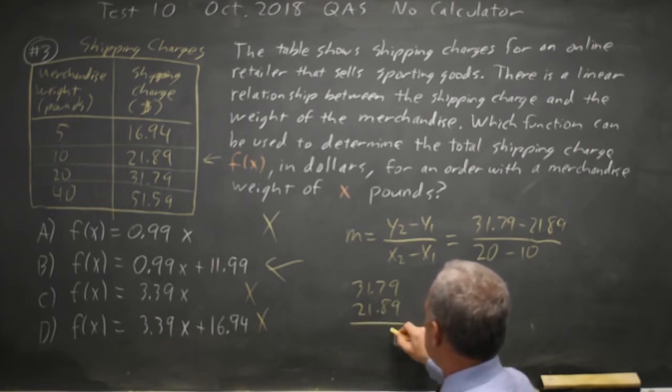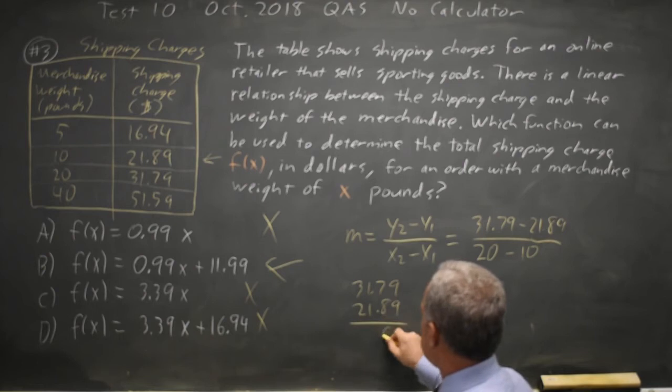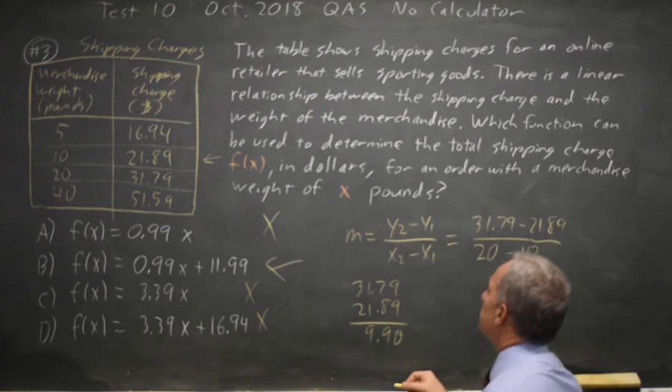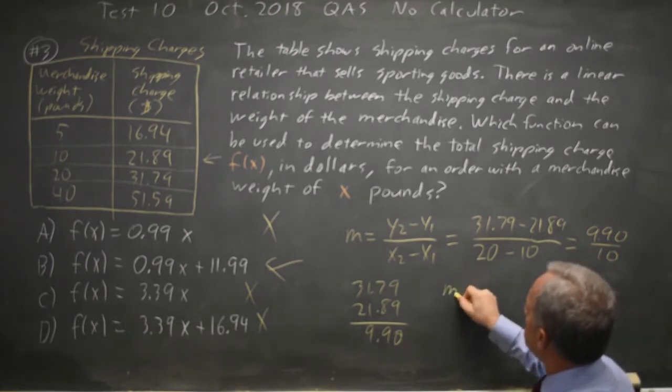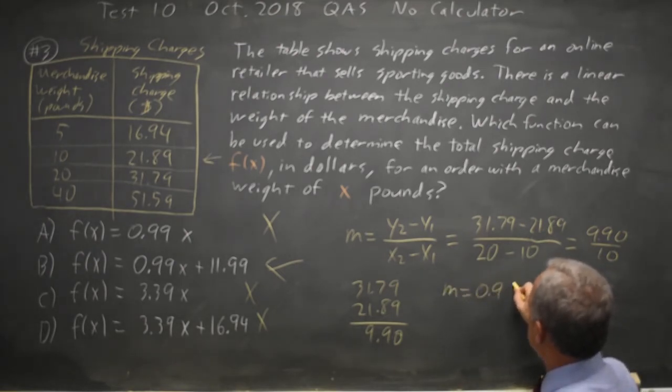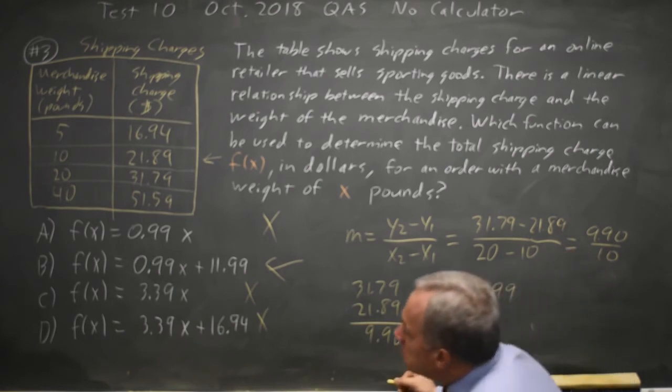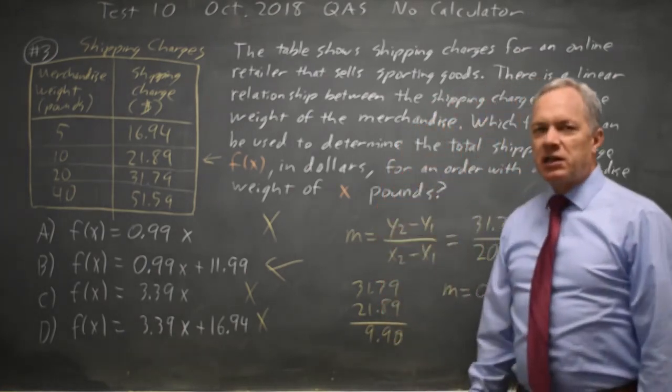9 minus 9 is 0. 17 minus 8 is 9. So my numerator is 990. My denominator is 10. So my slope is 99 cents per pound, which is choices A or B.